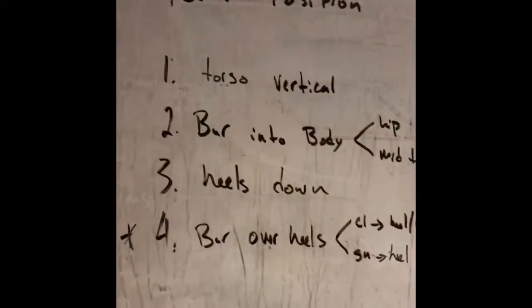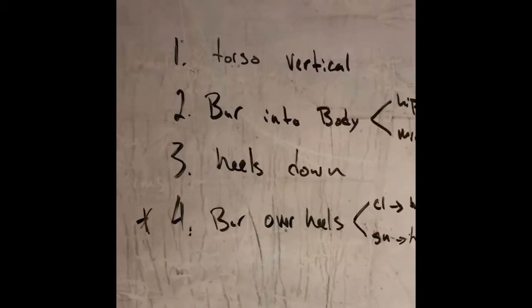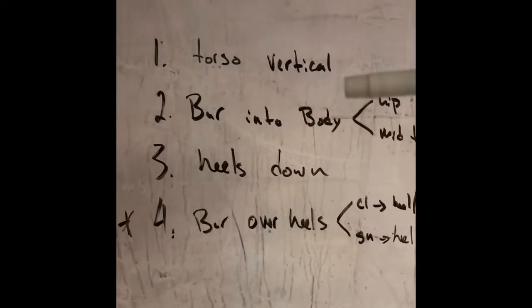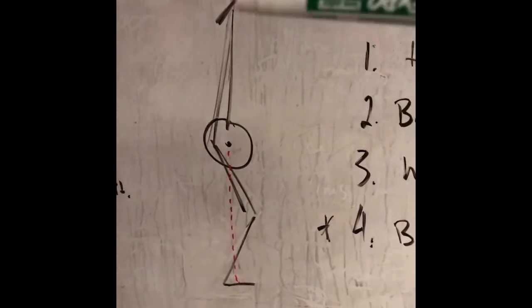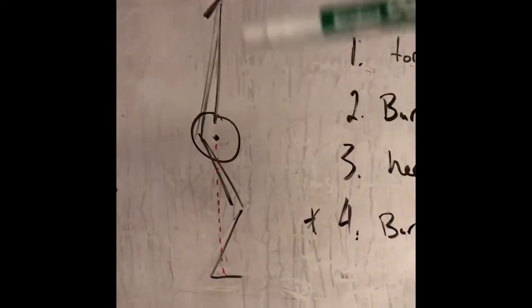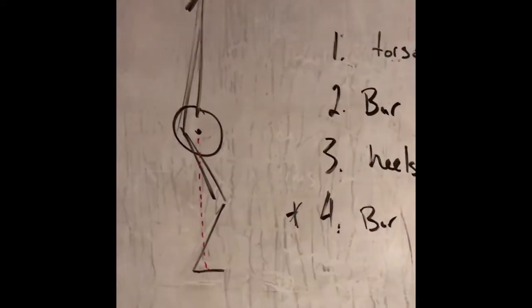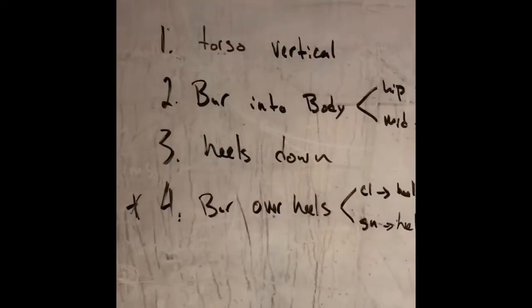really good position. Here's the pieces that you want to be aware of the power position. The first thing, probably the most important, is we want the torso to be as close to vertical as possible. Obviously when the barbell is heavier, it's going to pull the weight and the torso more forward. You have to resist that. Vertical torso is what we're looking for.